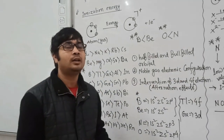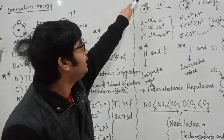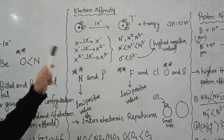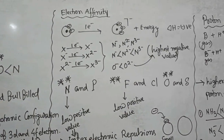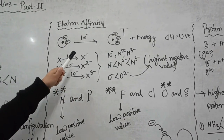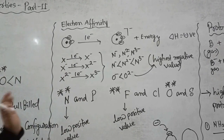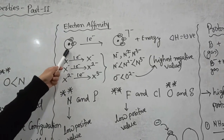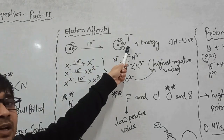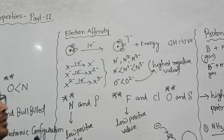The second important periodic property is electron affinity. What is electron affinity? It is the energy released when you add one electron to any atom in the gaseous state. That means, if one atom is there and you add one more electron, the atom becomes negatively charged — it becomes an ion — and it releases energy.